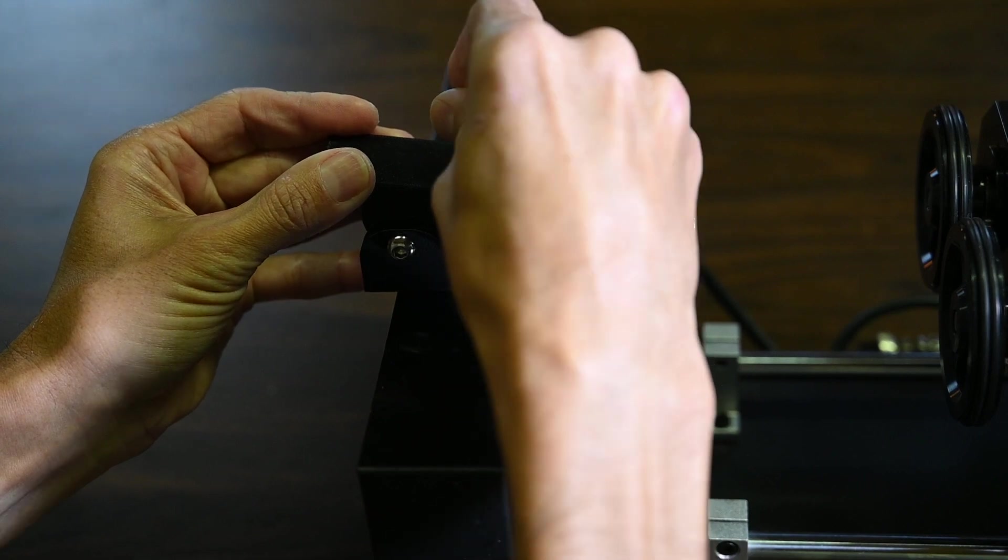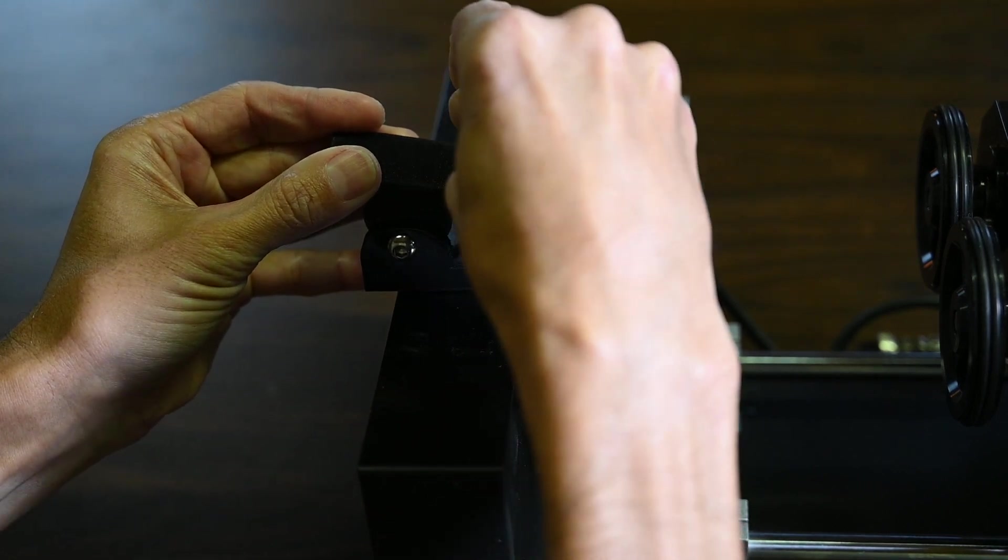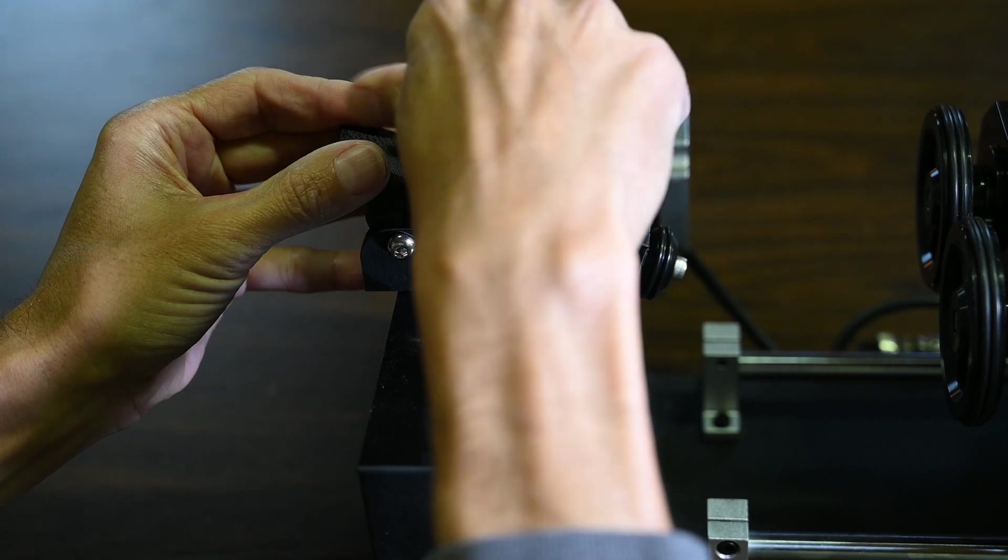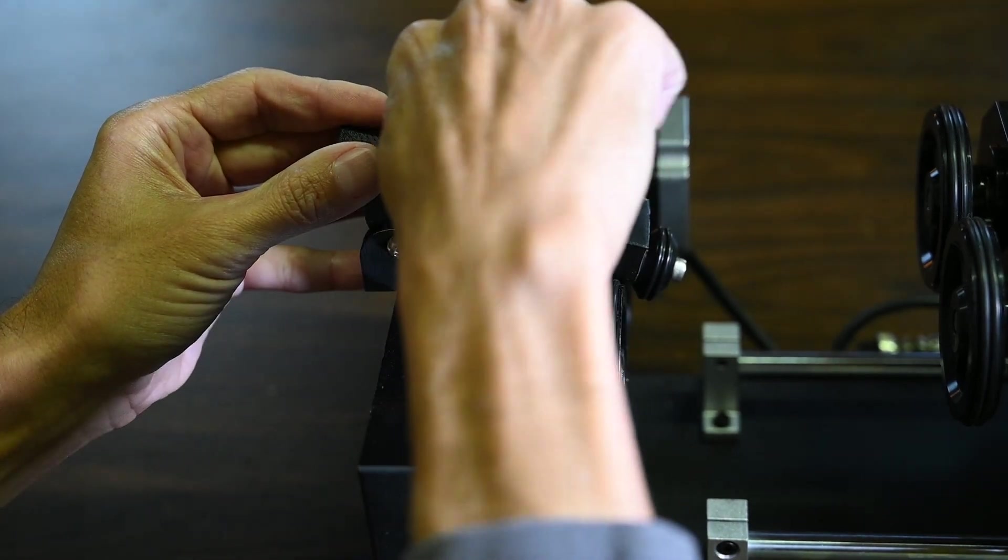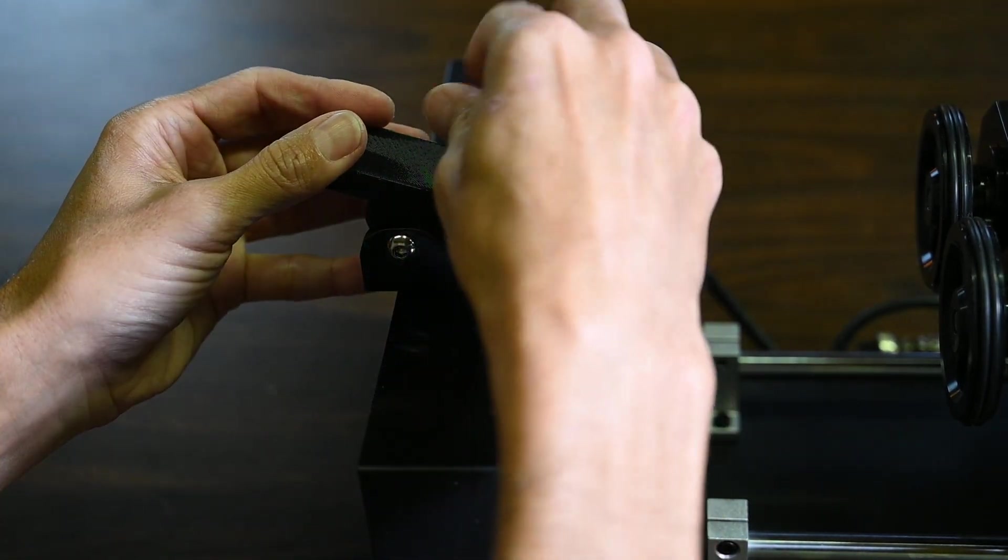And then push this through to the bottom plate and screw down into the threaded insert and then turn. You don't have to screw it all the way down.